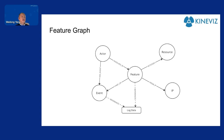Once you capture all those features, you save them in the graph. Here I lay out a very abstracted, simplified schema with actor, feature, events, resource, and IP. I also have the log data at the bottom with a dotted link connecting to it, meaning that data is on demand — you access it when you need it. You can pull it because log data is often humongous, like terabytes or tens of terabytes, but if you only need to access specific data, it's pretty fast.